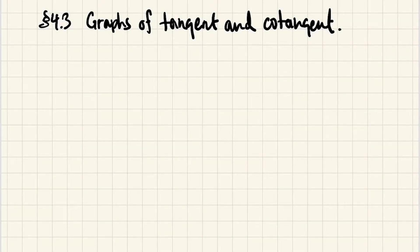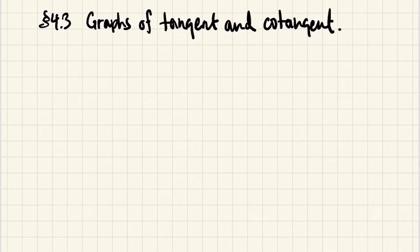In this section we're going to look at the graphs of tangent and cotangent functions. In order to motivate these graphs, let's recall that tangent is sine over cosine, and we will use what we know about the graphs of sine and cosine in order to generate the graph for tangent and cotangent.